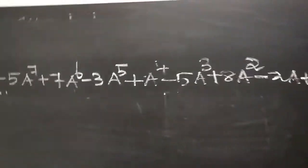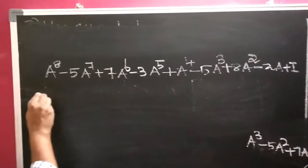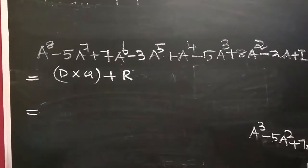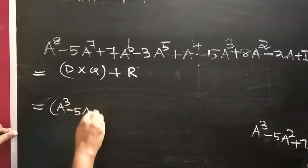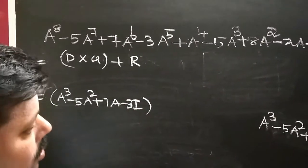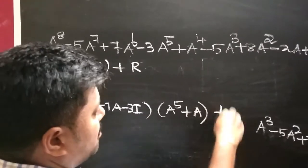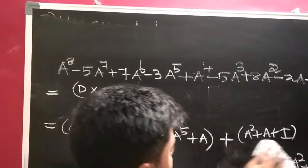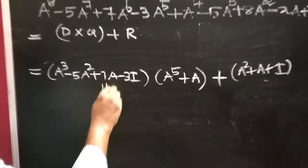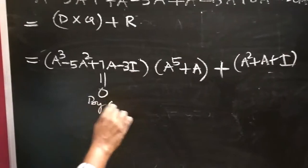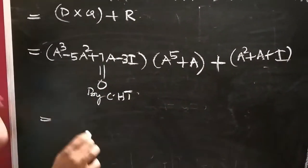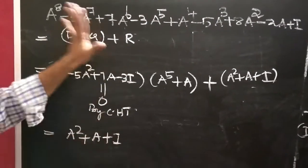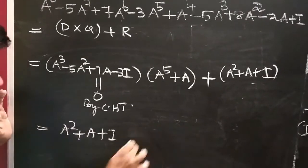So the given matrix equals divisor times quotient plus remainder. That is: (A cubed minus 5A squared plus 7A minus 3I) times (A power 5 plus A) plus remainder (A squared plus A plus I). By the Cayley-Hamilton theorem, the divisor equals zero, so the entire first term is zero. Therefore the value of the matrix equals only the remainder: A squared plus A plus I. So it is enough to find A squared plus A plus I.